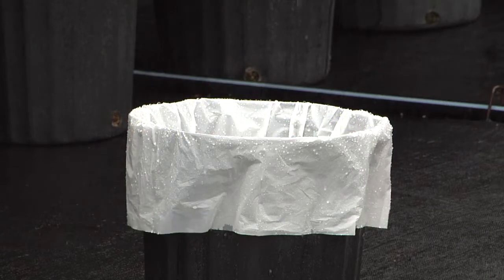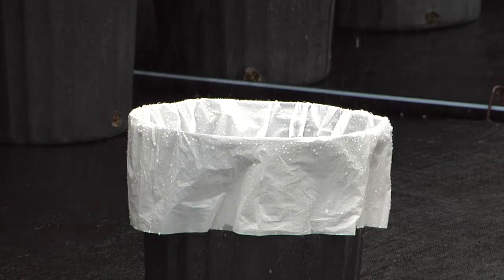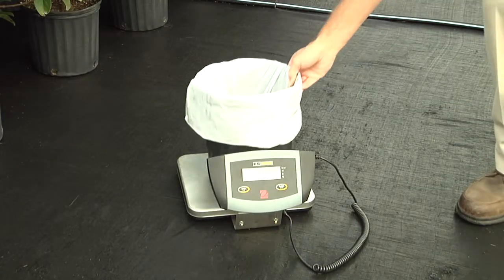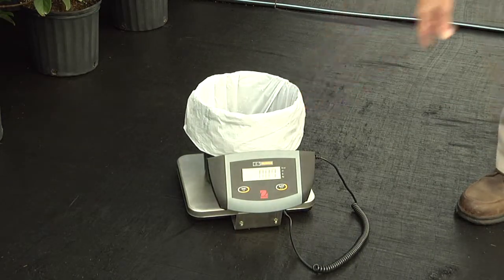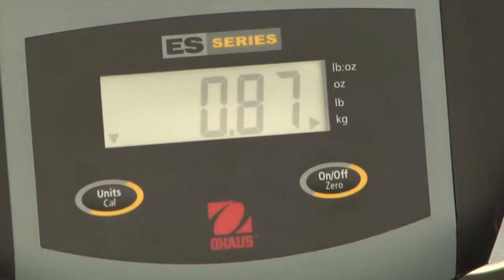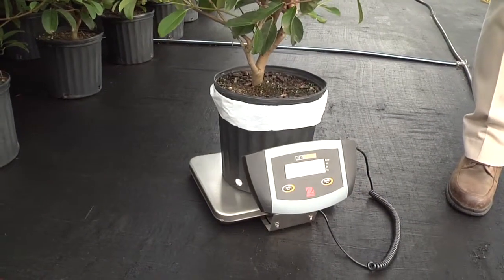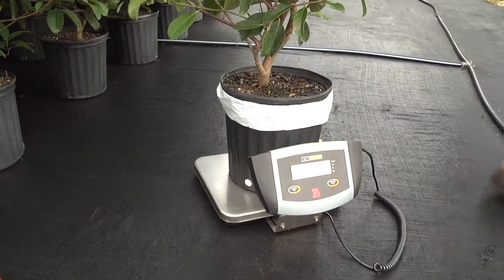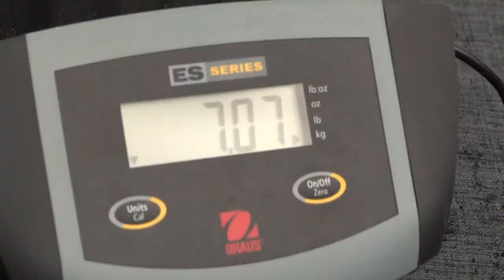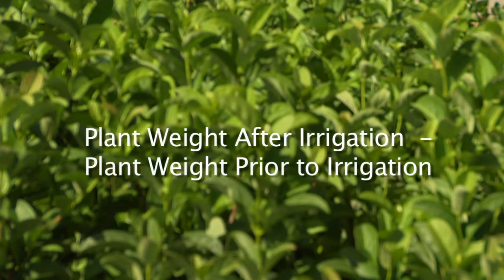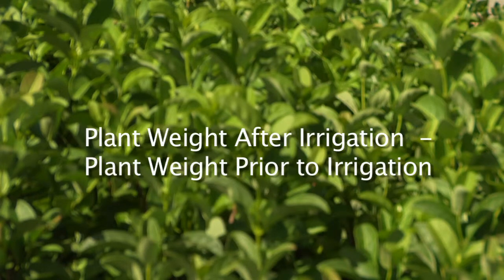Now, irrigate the production area and plastic lined containers. After irrigation, weigh each plastic lined container with water and average the weights. Also, weigh each plant with plastic lined container after irrigation and average the weights. Determine the plant weight gain by subtracting the average weight of plants prior to irrigation from the average weight of plants after irrigation.